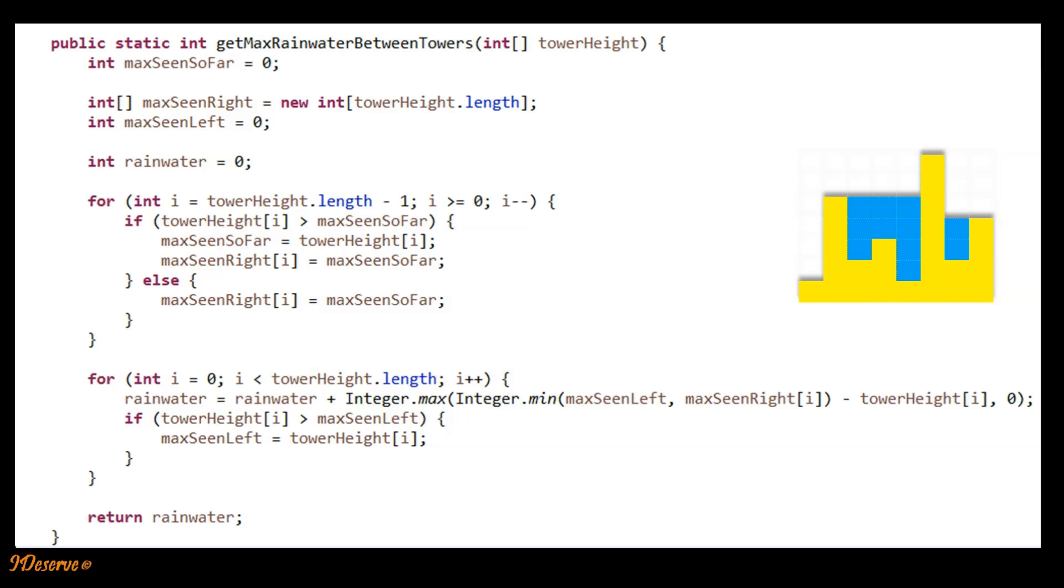We did one optimization here where we are not pre-populating maxSeenLeft array and we just keep single variable maxSeenLeft. While we are calculating water over each tower by iterating from left to right, we just keep track of max seen left in maxSeenLeft variable.